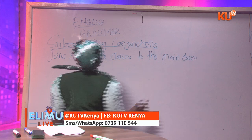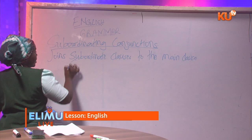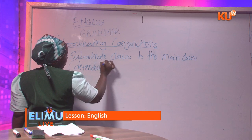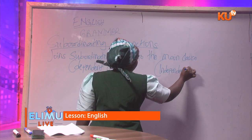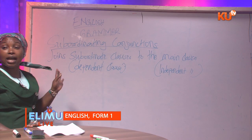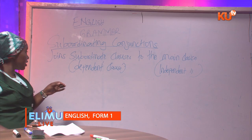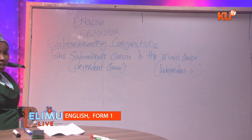We call the subordinate clause a dependent clause, and the main clause we call an independent clause. These types of conjunctions are quite many, unlike the coordinating conjunctions, and they are used to join dependent clauses to the main clause, or the independent clause.